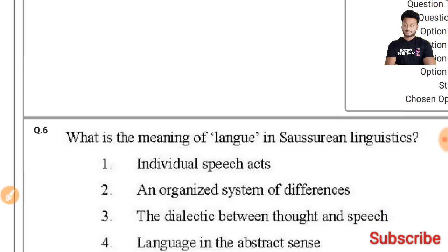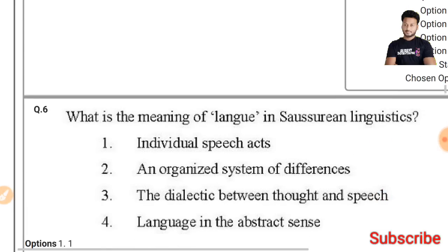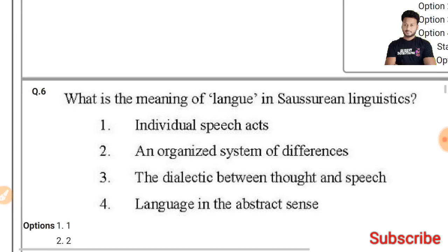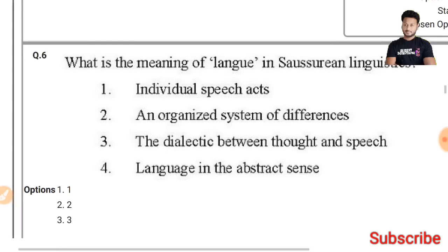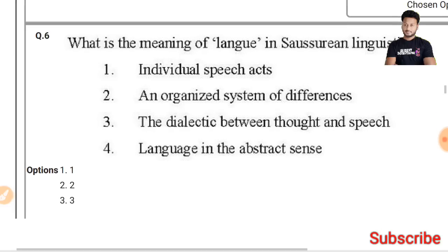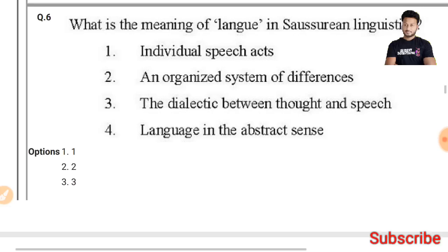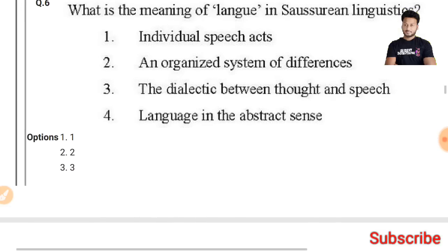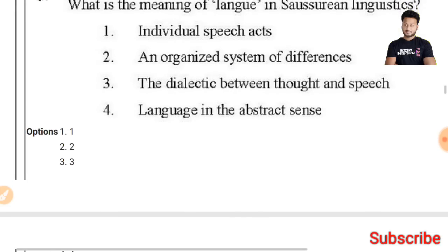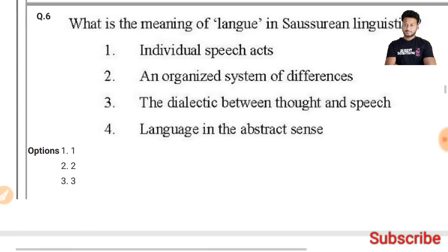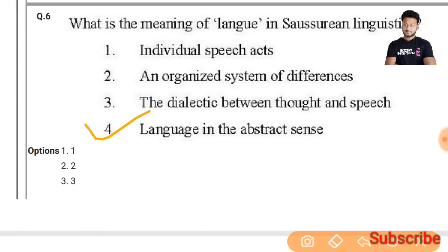Question 6: What is the meaning of 'langue' in Saussurean linguistics? The meaning of 'langue' in Saussurean linguistics is 'language in the abstract sense.' The fourth option is the right answer.